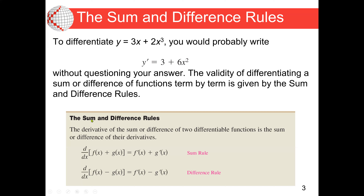Now these are the sum and difference rules. The key thing to know is that if you have a sum of two functions, f(x) plus g(x), and we need to find the derivative, all we need to do is find the derivative of each term, then add them together. So the derivative of f(x) plus g(x) is the derivative of f(x) plus the derivative of g(x).